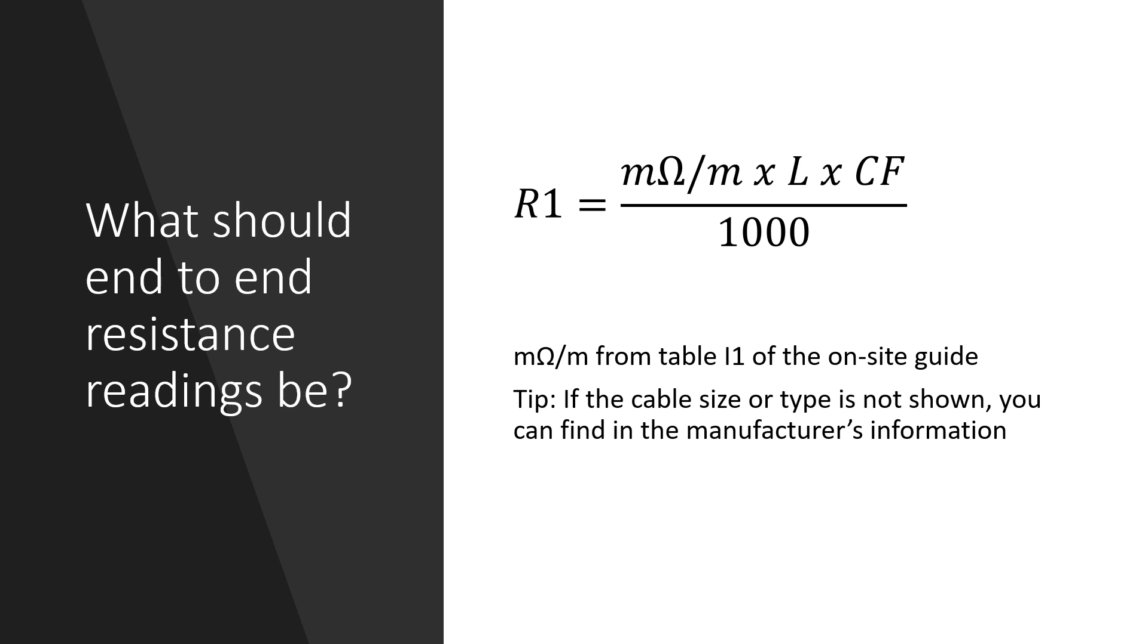So to work out what to expect the end-to-end readings to be we take the value for the size of conductor and calculate as follows: milliohms per meter multiplied by length multiplied by correction factor and then divided by 1000.